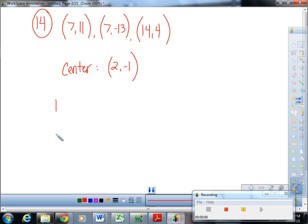Well, this seems like a wonderful opportunity here. So if I just kind of generally sketch 2, negative 1, 7, 11, 7, negative 13, and 14, 4, I'm basically trying to prove that those three points lie on a circle that's centered at 2, negative 1. Well, you've got to kind of think of where a circle came from.